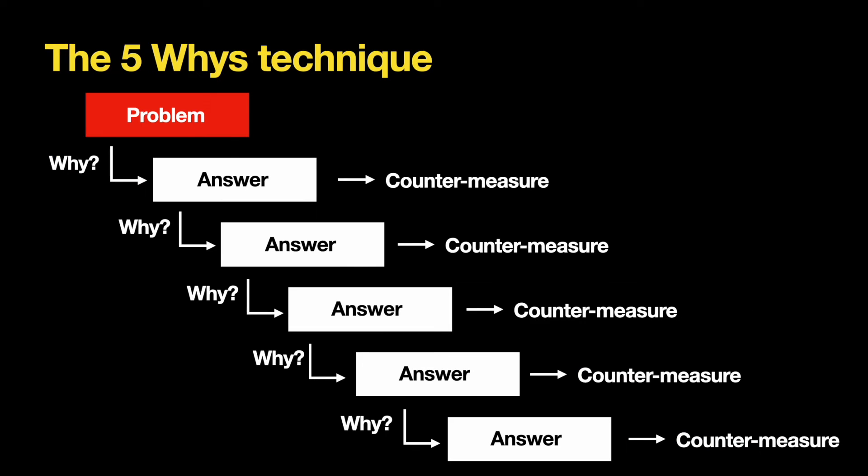The final 5 Whys scheme will look like this. If you learn to fix the problem in this way, you will build a more robust system that will result in fewer problems.